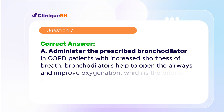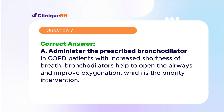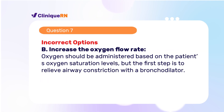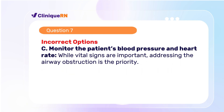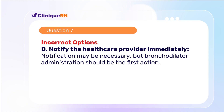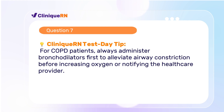The correct answer is A: Administer the prescribed bronchodilator. In COPD patients with increased shortness of breath, bronchodilators help to open the airways and improve oxygenation, which is the priority intervention. Oxygen should be administered based on the patient's oxygen saturation levels, but the first step is to relieve airway constriction with a bronchodilator. While vital signs are important, addressing the airway obstruction is the priority. Notification may be necessary, but bronchodilator administration should be the first action. For COPD patients, always administer bronchodilators first to alleviate airway constriction before increasing oxygen or notifying the healthcare provider.